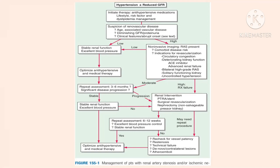After renal intervention, repeat assessment at six to twelve weeks. If excellent blood pressure control and stable renal function are achieved, proceed to optimizing anti-hypertensive and medical therapy. If not, recheck for vessel patency or stenosis, technical failure, or de novo contractual lesions. If there is progression during the three to six month repeat assessment, proceed directly to renal intervention — PTRA, stent, or surgical revascularization.